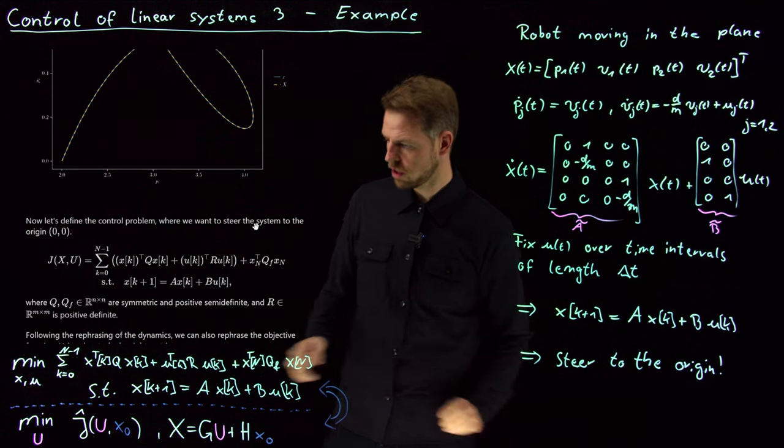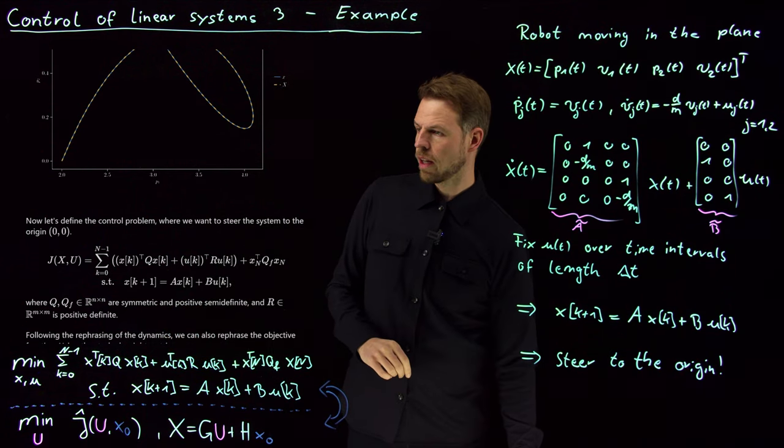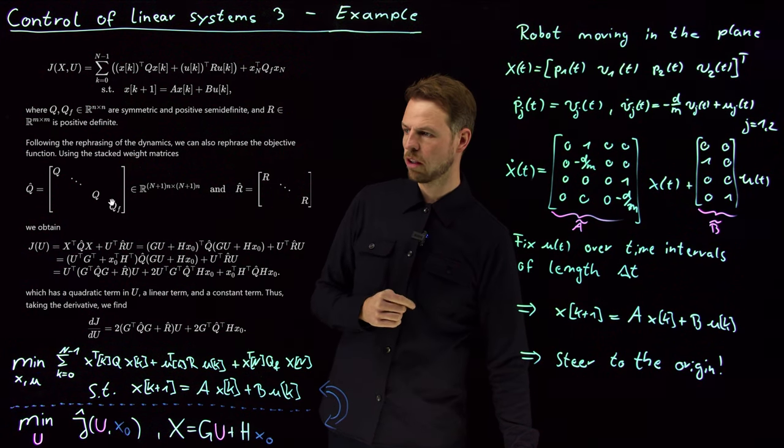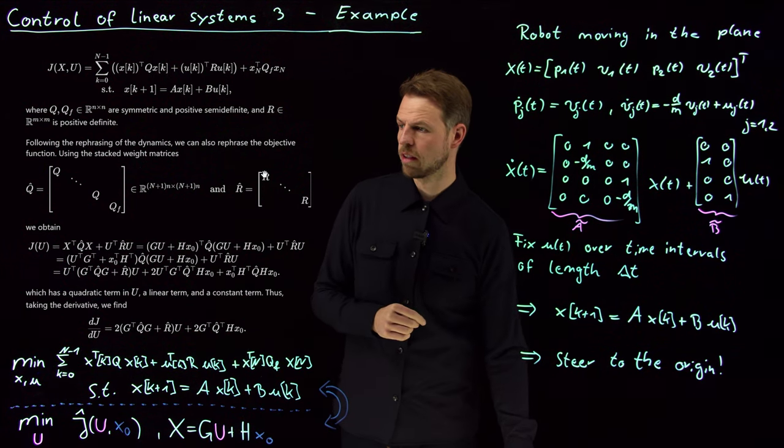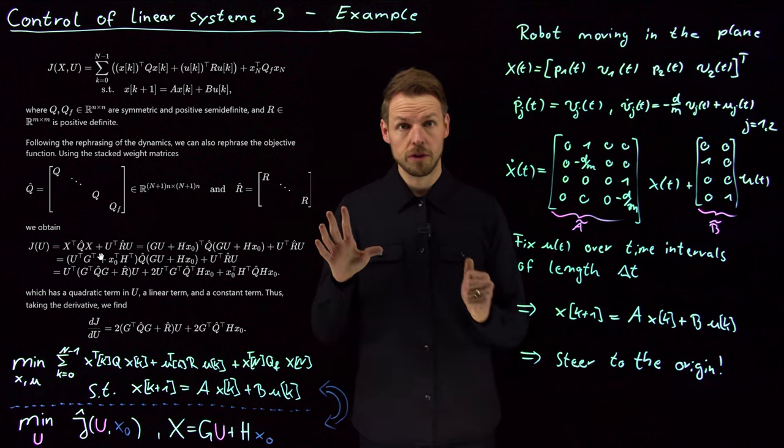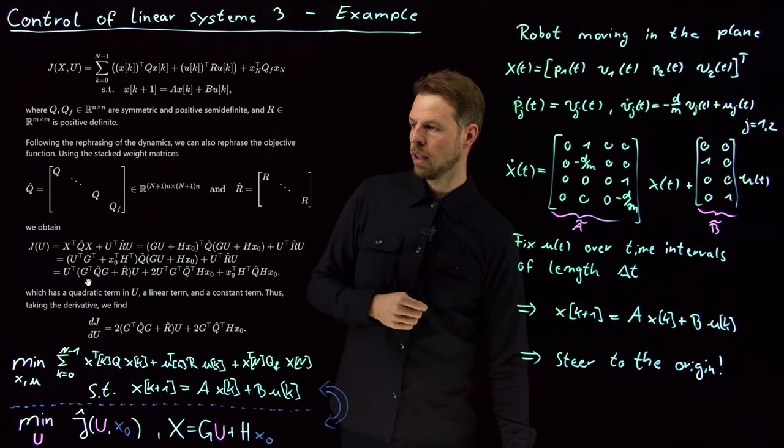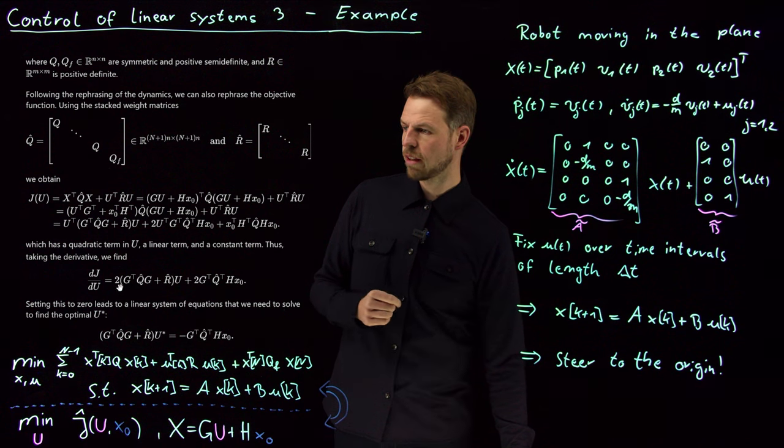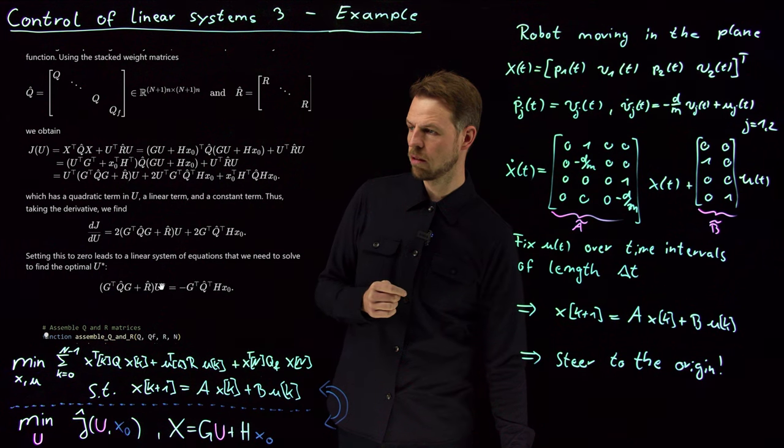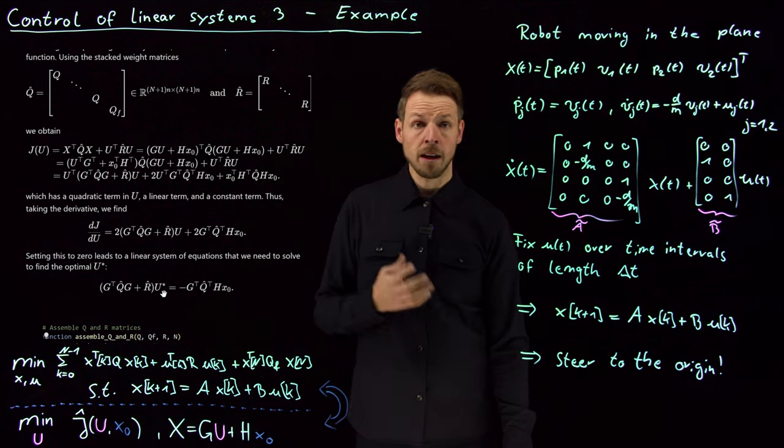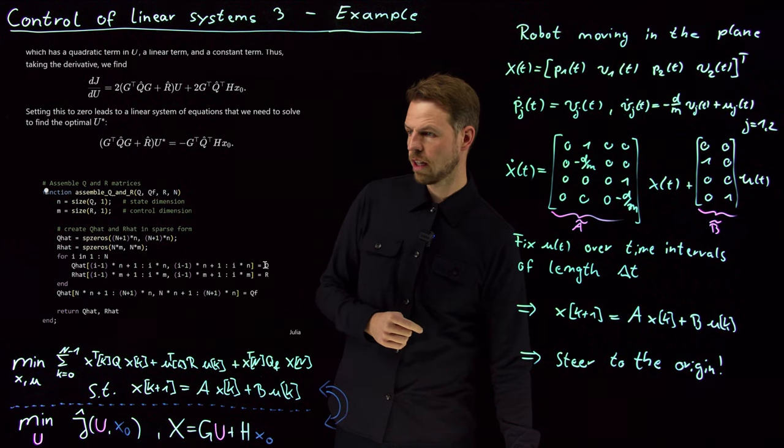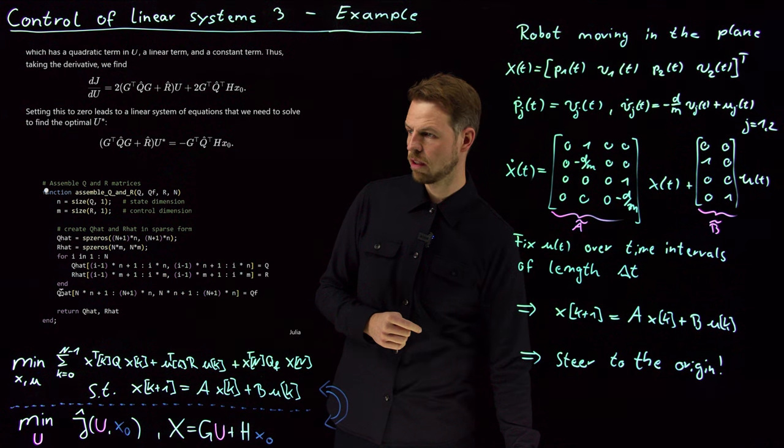What we can do now is we can define the control problem. So here is the original formulation exactly as you see it here, the top two rows. We have seen also that we can do this reshaping by introducing Q hat which is all these Q matrices, this block diagonal matrix and the Q final, and the same for the R matrix which is our R hat. This is exactly as we derived it in the last video where you see that we get this quadratic form. Here's a quadratic term in U, a linear term in U and this constant term. If we take the derivative of this we got this equation and if we set it to zero we saw that we found this linear system. So U star, the optimal solution, solves this linear system.